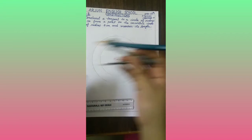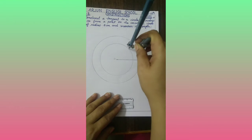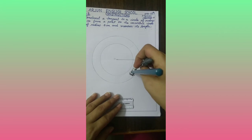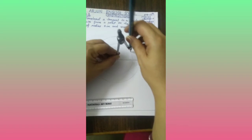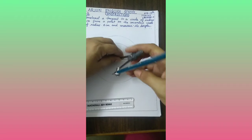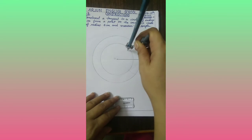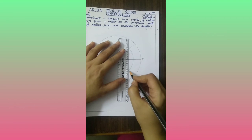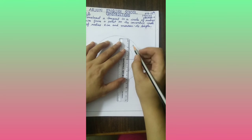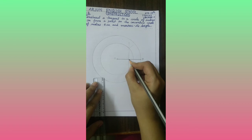Now draw perpendicular bisector of this line segment. You know how to draw perpendicular bisector. Take more than half radius and then draw arcs on both sides and get one midpoint, point M.